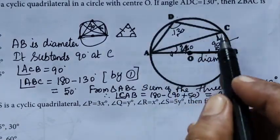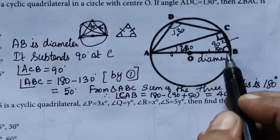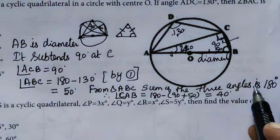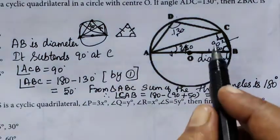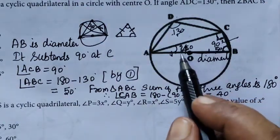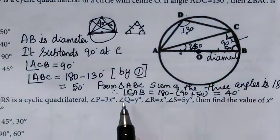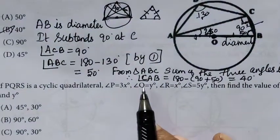This is a right triangle. The sum of the angles is 180 degrees. Knowing two angles, we can find the third angle.